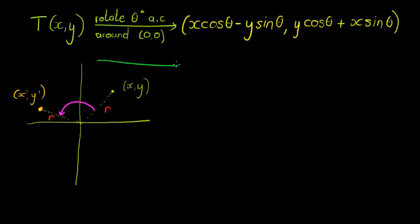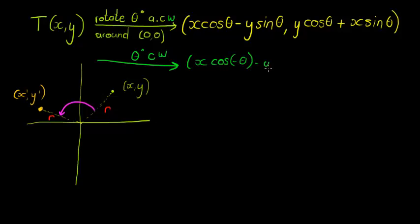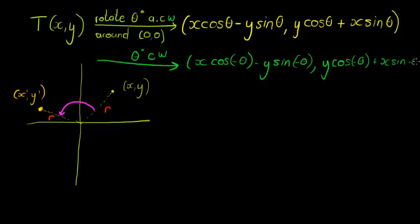Now, what happens when we do a clockwise rotation? This time, let's say we've got theta clockwise — let's say CW. Please remember that clockwise rotation is just in the opposite direction, so all we do with our angle is change the sign of the angle. So this would be x cos(−θ) minus y sin(−θ) for the x coordinate, and y cos(−θ) plus x sin(−θ) for the y coordinate.